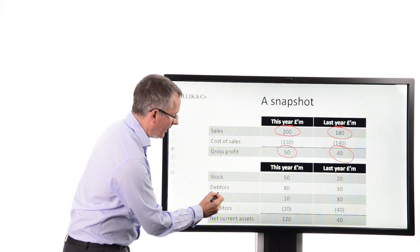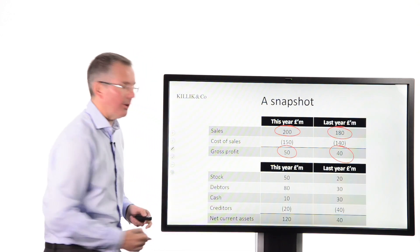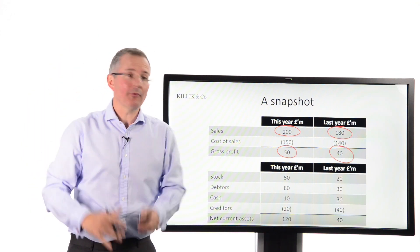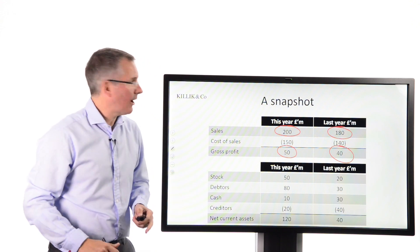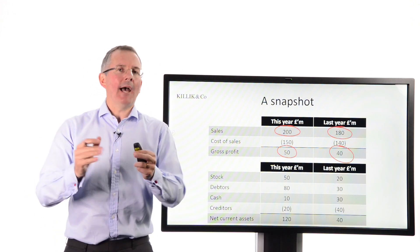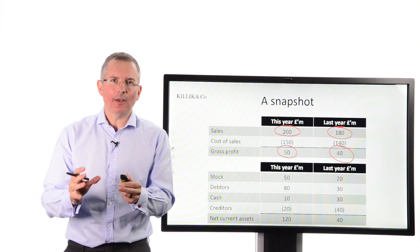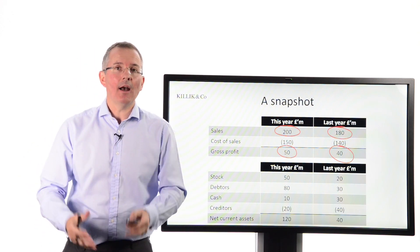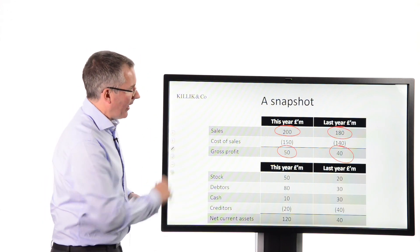So I'm focusing just on the short-term assets and liabilities of this business. Stock, receivables and cash, and short-term creditors. If you add up those three assets, deduct short-term creditors, you get something called net current assets, aka working capital. Now I'm going to show you a little trick, a way to analyze working capital, but you don't necessarily need it to be able to see that things are going a little bit wrong.